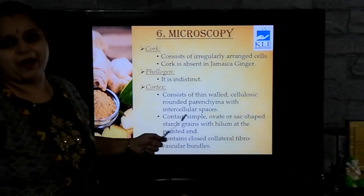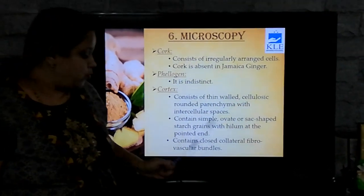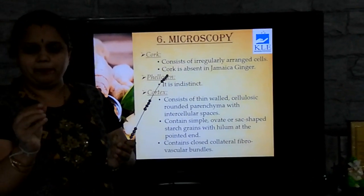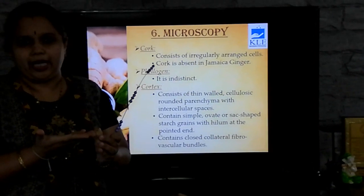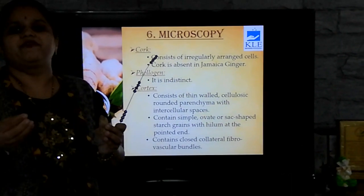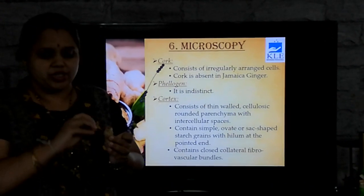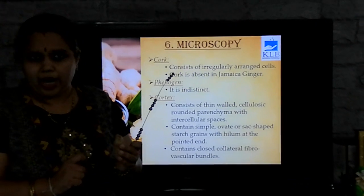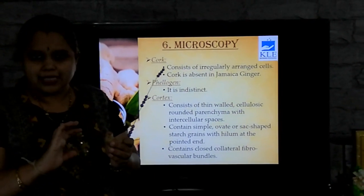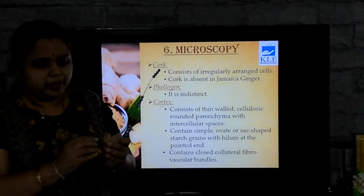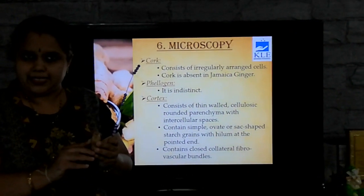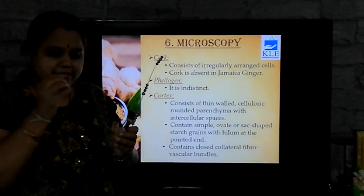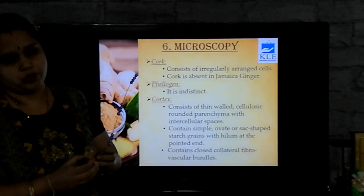Coming to the next parameter — microscopic evaluation. Here, we take the rhizome, cut it into a small piece, and take the transverse section with the help of a blade. About 50 to 100 sections are taken, and from these the best 30 to 40 good ones are picked onto a watch glass. Then we treat it with chloral hydrate and boil it for some time so that the cells get cleared. Further, this can be treated with fluoroglucinol and concentrated HCl. The best sections can then be selected, put on a slide, and observed under the microscope, usually under 10X.